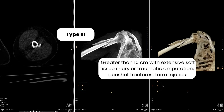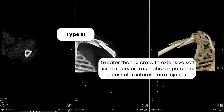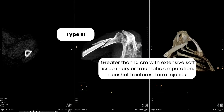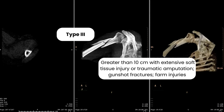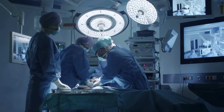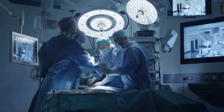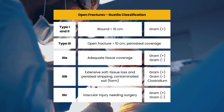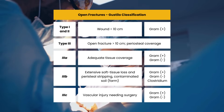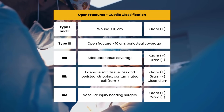Type 3 open fractures are the most difficult to classify given the varied injuries, degree of tissue damage, contamination, and vascular injury. These fractures are characterized as greater than 10 cm with extensive soft tissue damage or traumatic amputation. Type 3 also includes gunshot fractures and those caused by farm injuries. They're broken down into three sub-classifications: Type 3a have adequate soft tissue coverage, Type 3b have significant soft tissue loss with exposed bone requiring tissue transfer, and Type 3c consists of vascular injuries requiring repair for limb preservation.